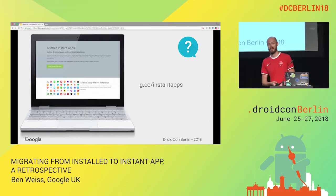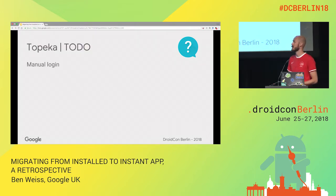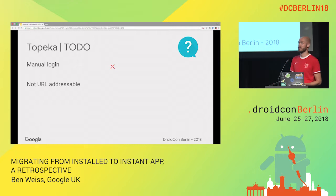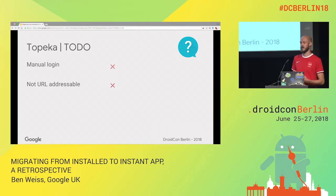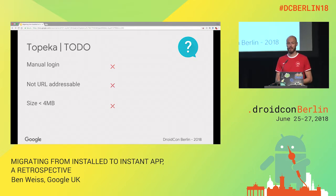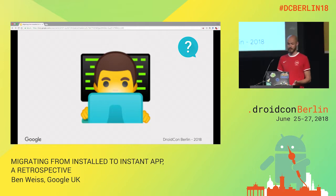Firstly, I went to the documentation, read up on it, and saw what's going on — what are the limitations, what are the benefits, what do I have to do. Then I came up with a list. The list basically says: there's manual login in the app, I can't do that as-is, so I have to take care of this. Also the app is not URL addressable — I don't have any URLs associated with my activities and entry points. And the size was more than four megabytes, so that was not cool. Then I got cracking and started diving in.